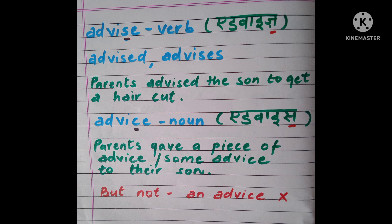Here the parents advised their son Viwan to get a haircut, or they gave a piece of advice to their son. Now understand the difference: 'advise' (A-D-V-I-S-E) is a verb and is pronounced with the 'z' sound — advise. You can use its different forms like advised, advises, as you do with other verbs like jumped, jumps. Whereas 'advice' (A-D-V-I-C-E) with a 'c' is pronounced as advice with the 's' sound, and it is a noun.